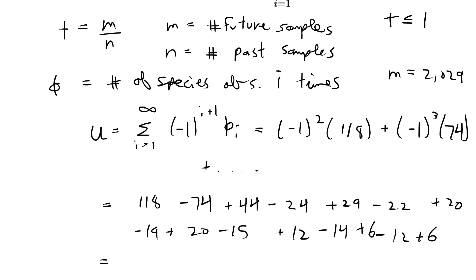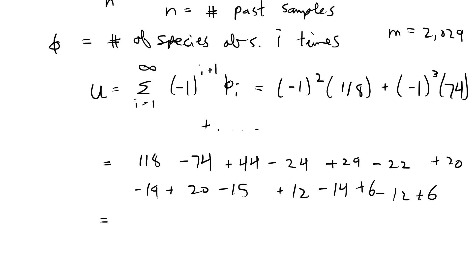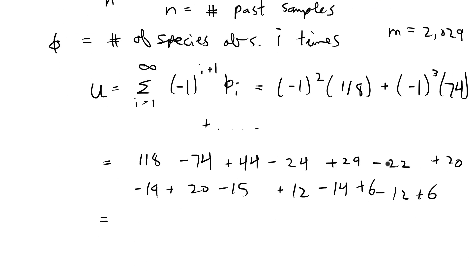I have all the values written out. This is basically just summing up the number of species that were given in the data table and then oscillating back and forth plus, minus, plus, minus. When we do this entire sum, our number of unseen species that we would expect to collect, if we collected 2,029 more samples, would be 75 new species.